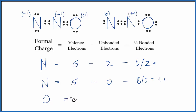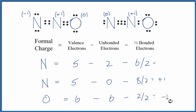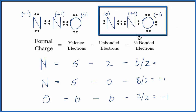For the oxygen, group 16, so six valence electrons. Minus the unbonded: two, four, six of those. Minus the bonded: two of those, divided by two gives one. Six minus six is zero, minus one, that gives us negative one. So the formal charge on this oxygen is negative one. With N2O, these formal charges look pretty much the same: negative one, plus one, zero versus zero, plus one, negative one. The big difference is that in one structure the oxygen has the negative charge, and in the other the nitrogen has the negative charge. Because oxygen is more electronegative, we would expect it to have the negative charge. So this Lewis structure is the more favorable or likely Lewis structure for N2O.